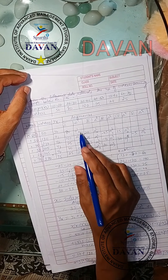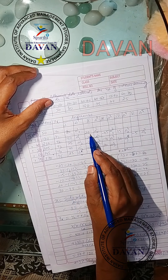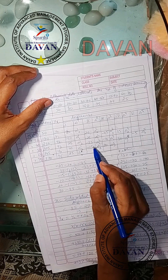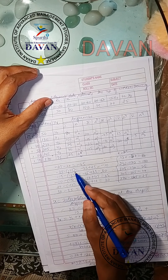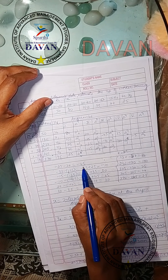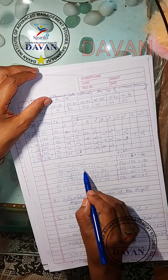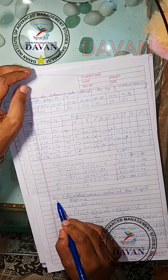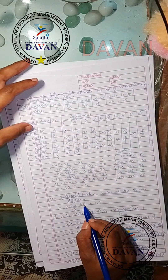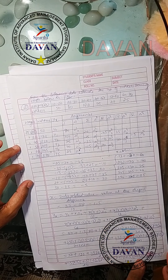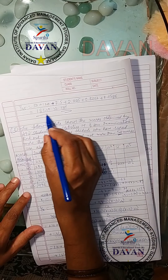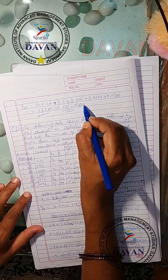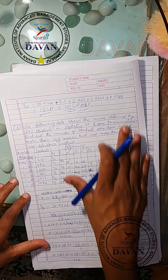First differences: 130 minus 50 = 80; 230 minus 130 = 100; 305 minus 230 = 75; 345 minus 305 = 40; 370 minus 345 = 25. Second differences: 100 minus 80 = 20; 75 minus 100 = minus 25; 40 minus 75 = minus 35; 25 minus 40 = minus 15. Third differences: minus 25 minus 20 = minus 45; minus 35 minus (minus 25) = minus 10. Continue until we get a stable single value and complete the difference table.